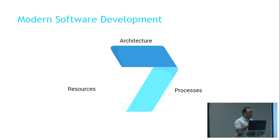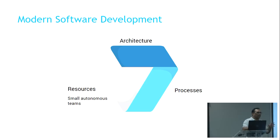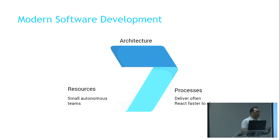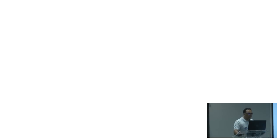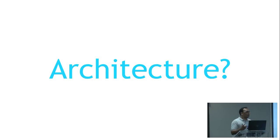Each of those three areas is very much linked — whatever you decide in one definitely affects the other two. There's a growing notion that we should work in smaller teams of about six to eight people who can work independently of each other. That drives the need towards continuous delivery — we always want to deliver more often and more quickly. On one hand we have monolithic architecture, and on the other microservices: which do you choose and why?